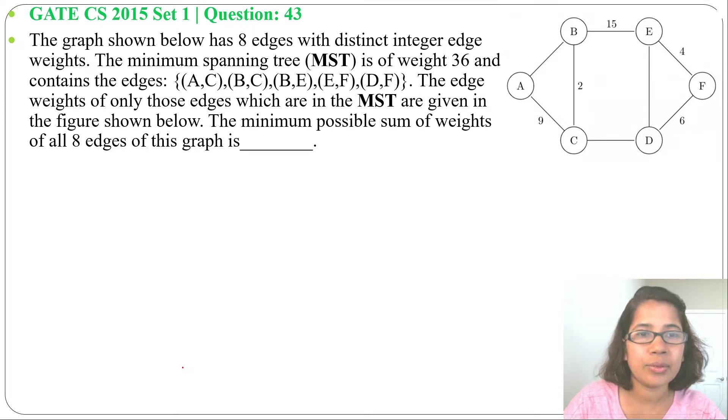The graph shown below has 8 edges with distinct integer edge weights. The minimum spanning tree is of width 36 and contains the edges AC, BC, BE, EF and DF. The edge widths of only those edges which are in the MST are given in the figure shown below. The minimum possible sum of widths of all 8 edges of this graph is blank.